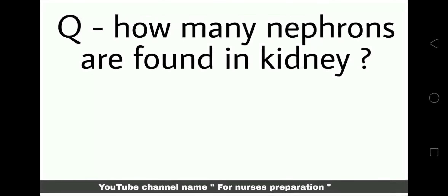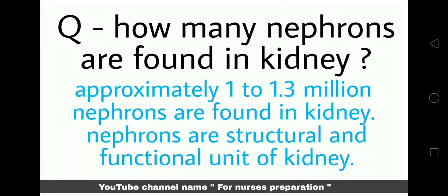How many nephrons are found in the kidney? Approximately 1 to 1.3 million nephrons are found in each kidney. Nephrons are the structural and functional unit of the kidney.